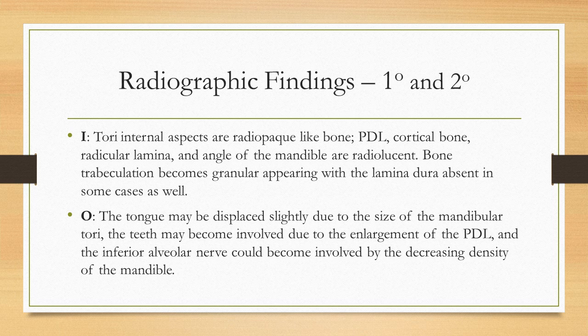I: Internal. Tori internal aspects are radiopaque like bone. The PDL, cortical bone, radicular lamina, and angle of the mandible are radiolucent.